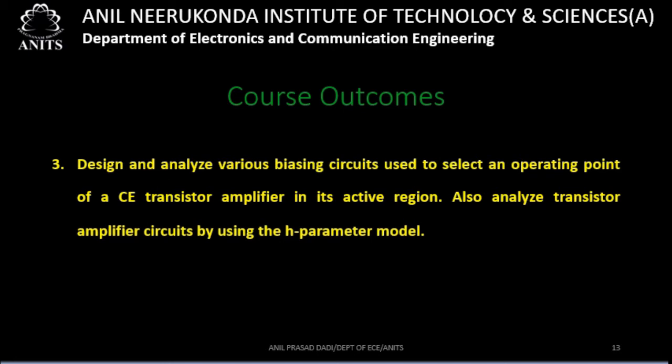The purpose of the biasing circuit is to select an operating point of a transistor amplifier in its active region. A BJT transistor can act as an amplifier only when operated in the active region. One way of fixing the transistor at its operating point in the active region is with the help of a biasing circuit. With biasing circuits, we can fix the operating point of the transistor in its active region.